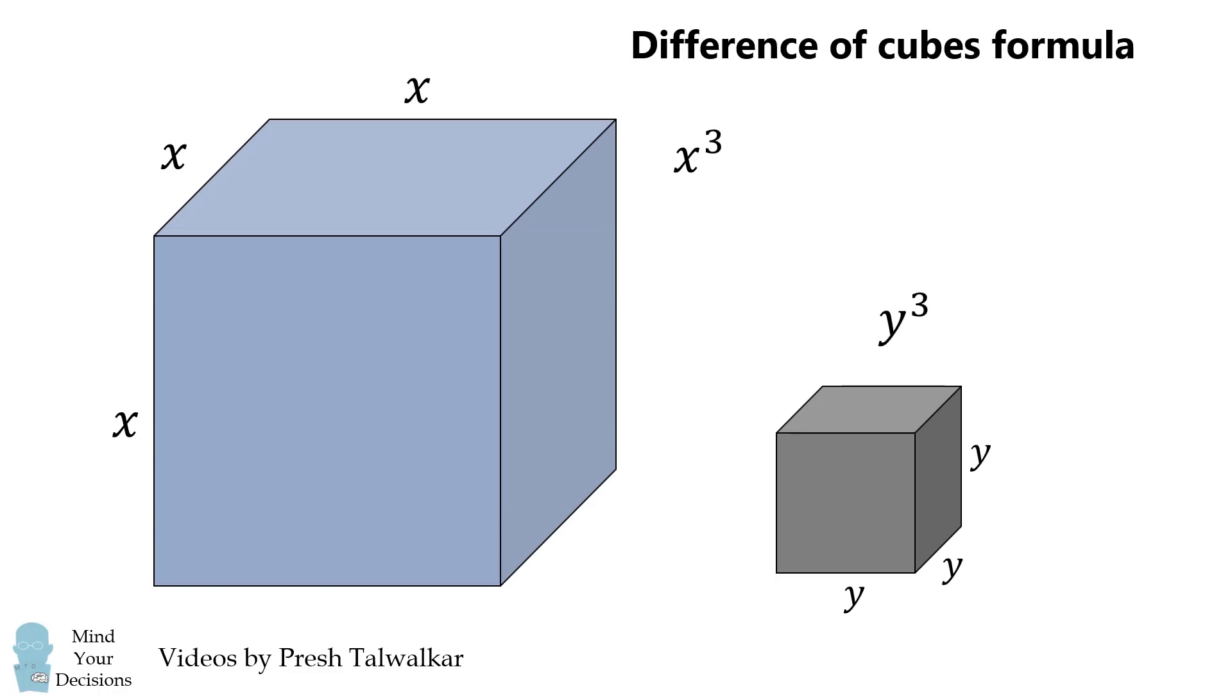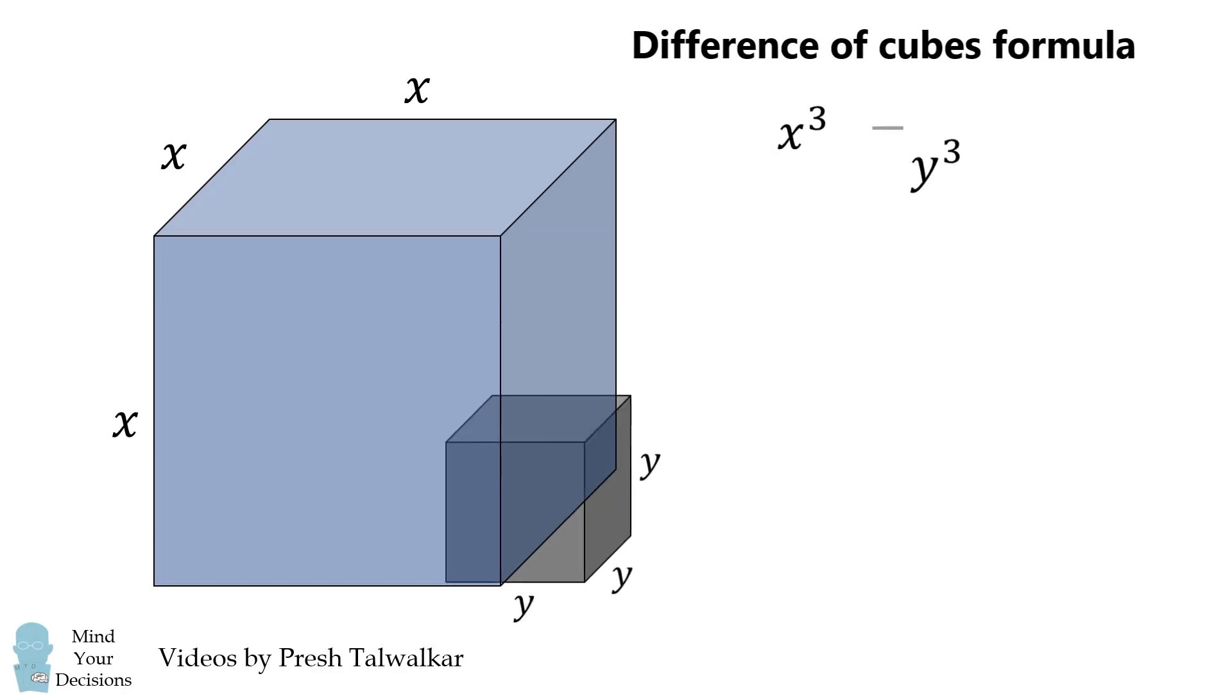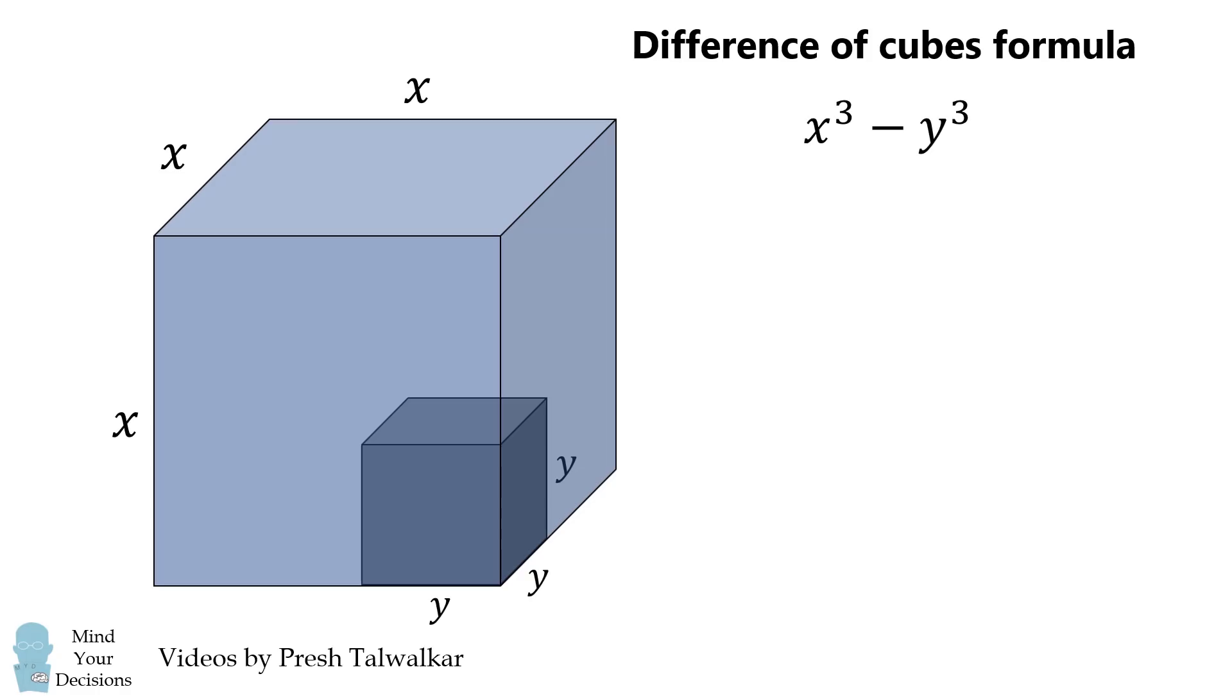What's the difference in volume of the larger cube minus the smaller cube? One way to express this volume is x cubed minus y cubed. We're now going to derive another way to express this volume. It will be the sum of the volume of three rectangular prisms.